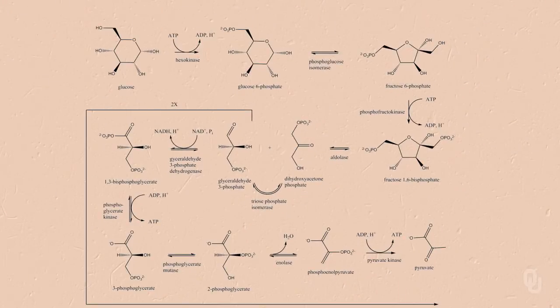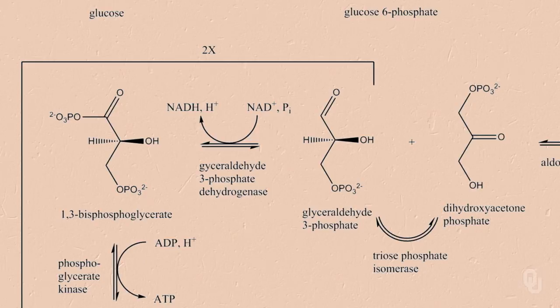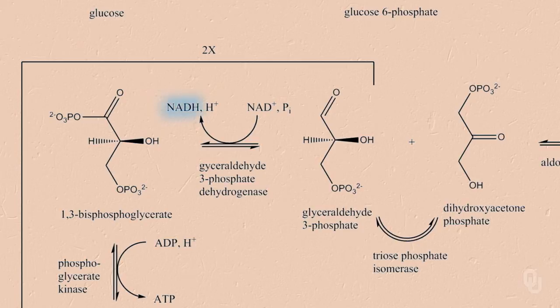To begin our discussion of anaerobic metabolism, we first need to revisit glycolysis. The step I wanted to emphasize is where NADH is formed — the glyceraldehyde-3-phosphate dehydrogenase reaction. Glyceraldehyde-3-phosphate is converted to 1,3-bisphosphoglycerate, and concurrent with that, NAD+ is reduced to NADH. This happens twice because we effectively have two glyceraldehyde-3-phosphates converted, so one of our products of glycolysis is two NADH molecules.